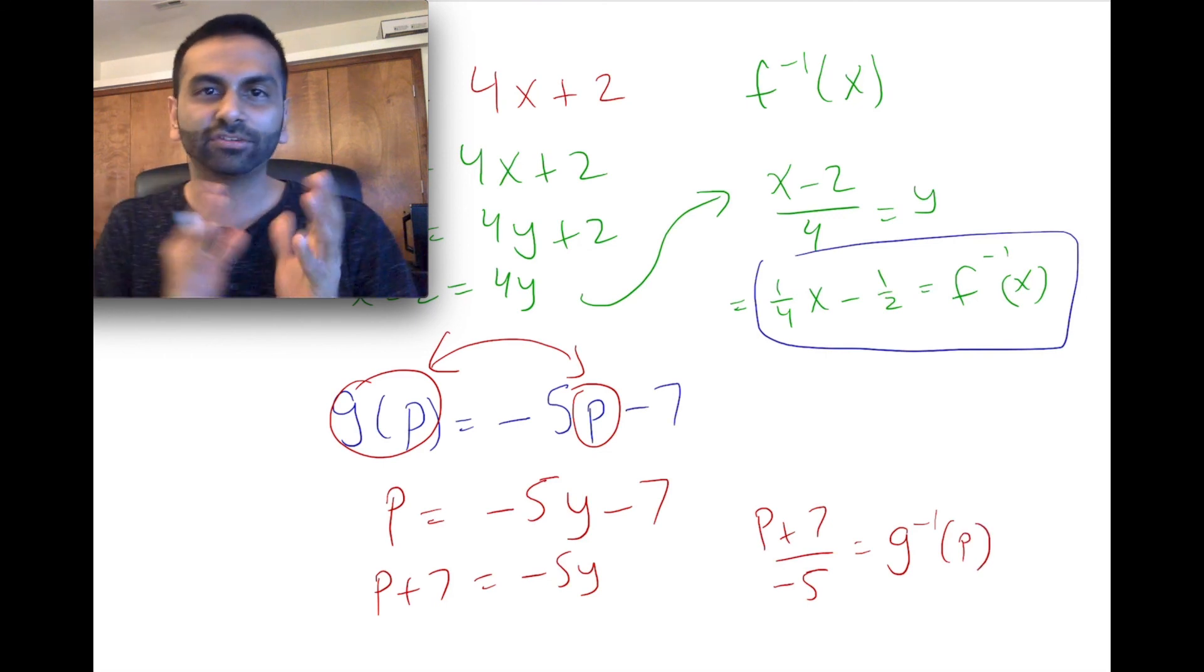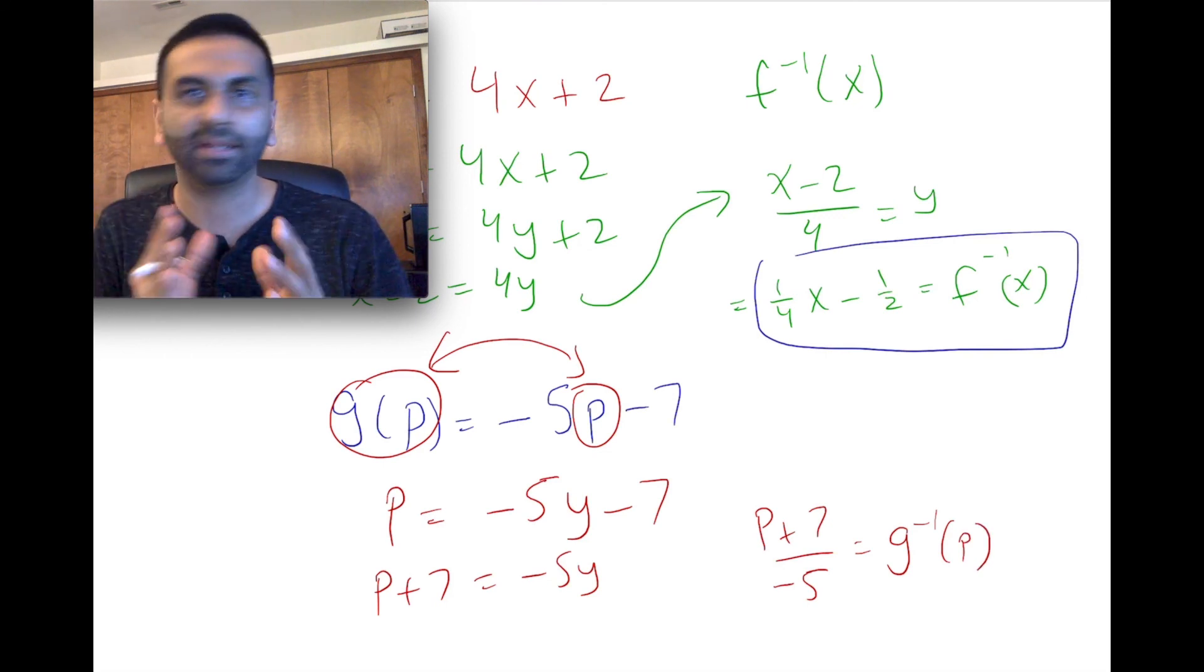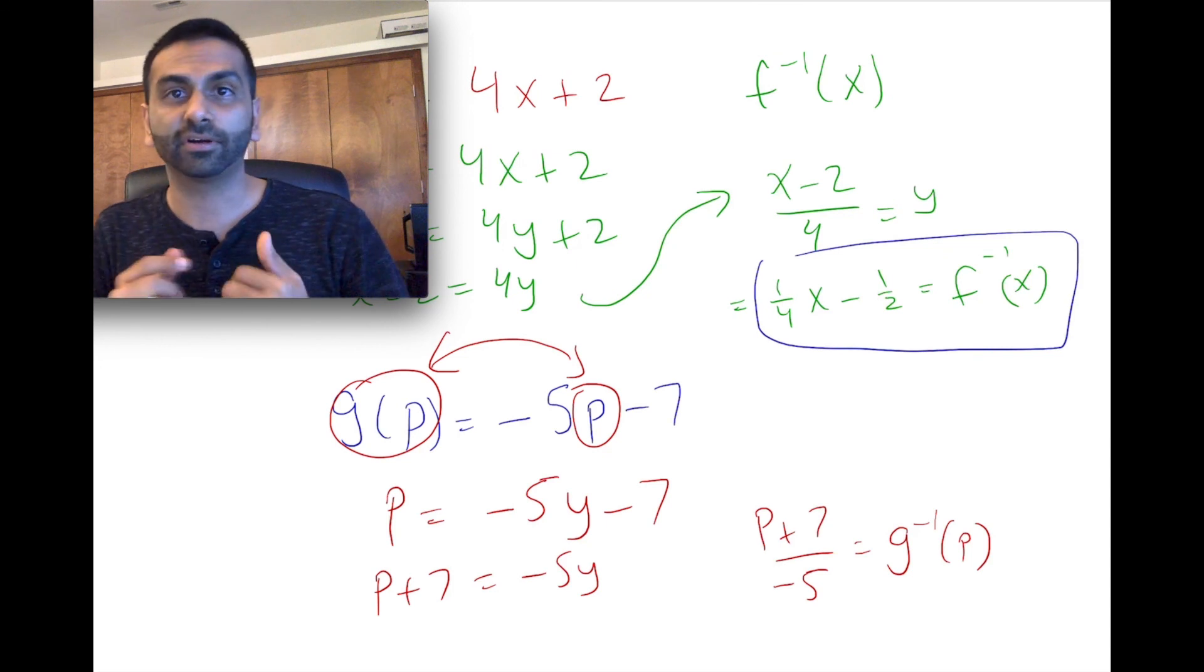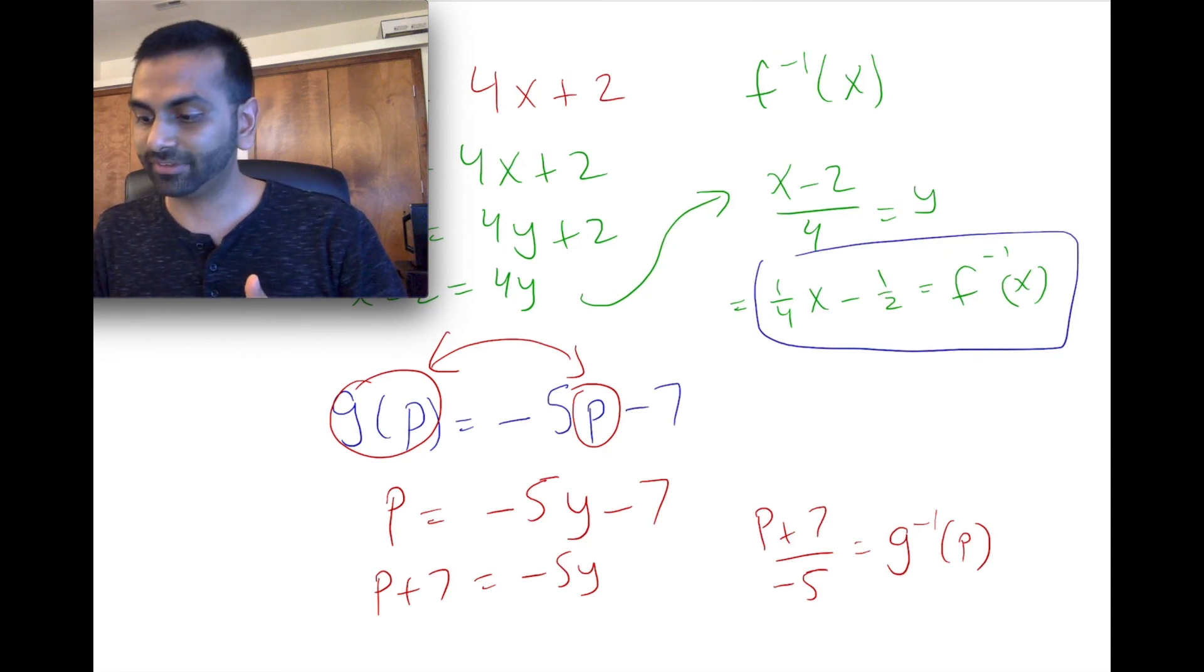So again, you switch. So long story short, you switch the input and the output. You solve for the original, what was originally the input, but now it's sort of written as your output. And once you get that, notationally, that's just called the inverse function.